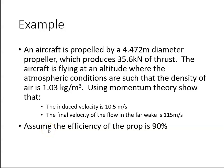An aircraft is propelled by a 4.472 meter diameter propeller which produces 35.6 kN of thrust. The aircraft is flying at an altitude where the atmospheric conditions are such that the density of the air is 1.03 kg per meter cubed and we're told that using momentum theory